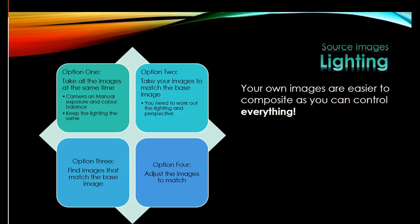Next we need to look at lighting, and there are four main options. Option one is to take all your images at the same time — stick your camera on manual both in terms of exposure and colour balance, keep the lighting the same, and you can get it done quite easily. This means you've got very little to control later on, particularly if you're just doing a single picture with four or five elements, whether they're Lego minifigs or people you're adding and shrinking down. If you can take them all at the same time it makes life a lot easier.